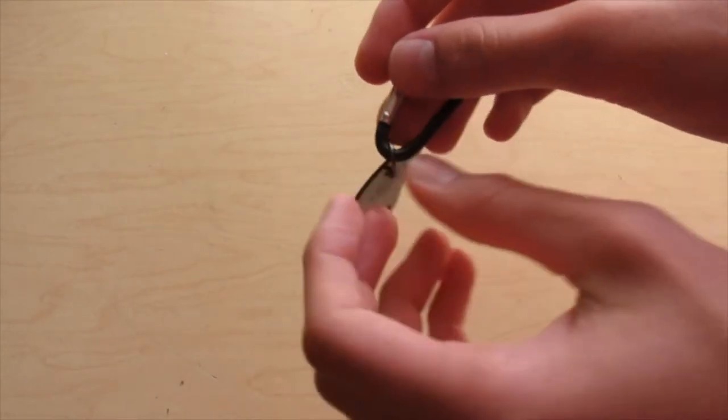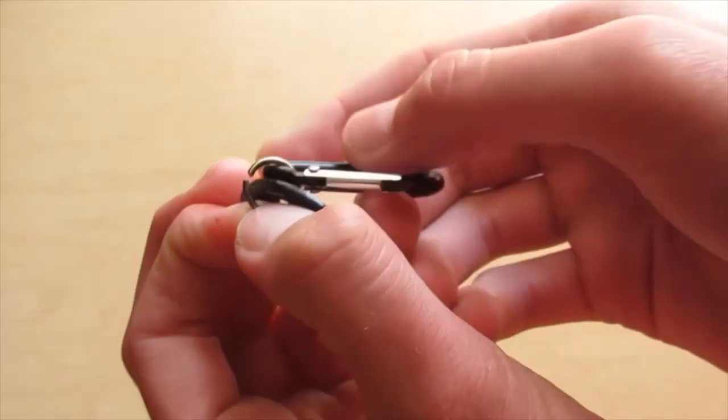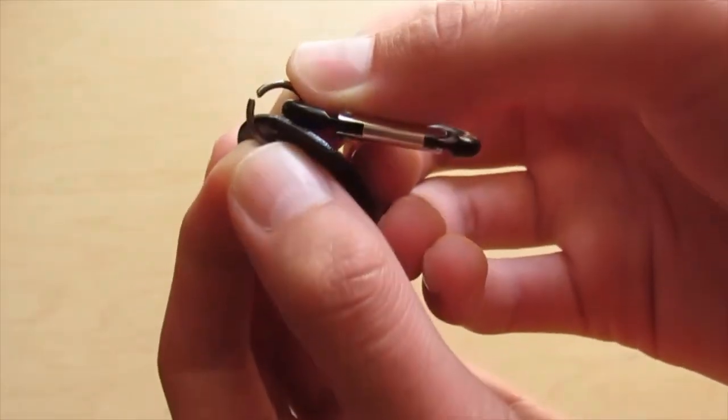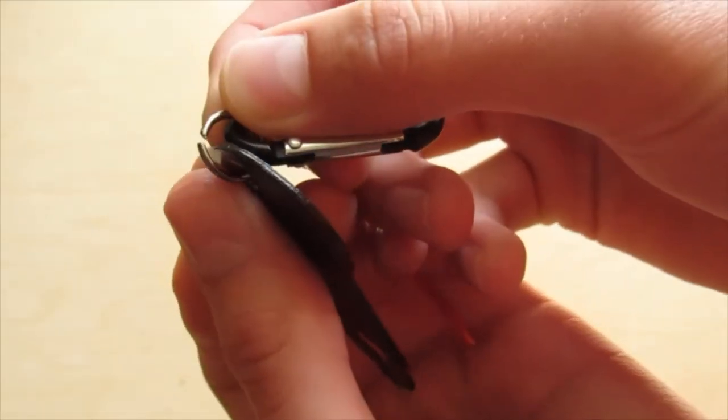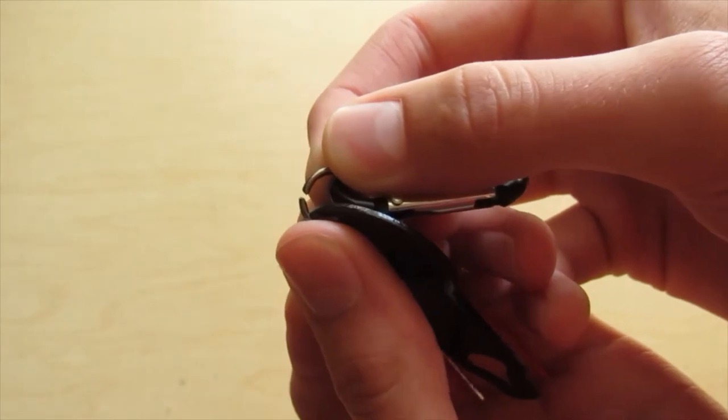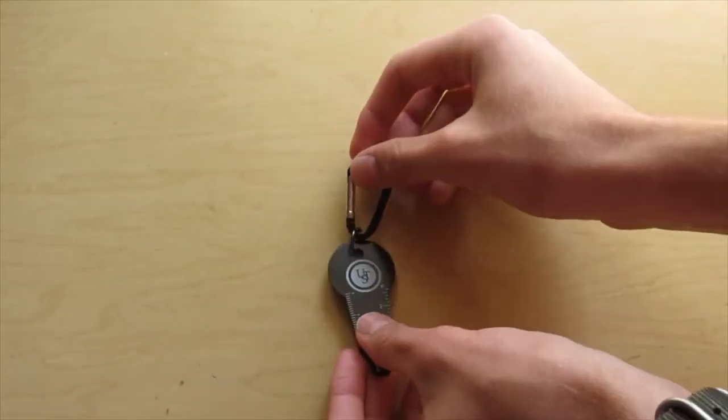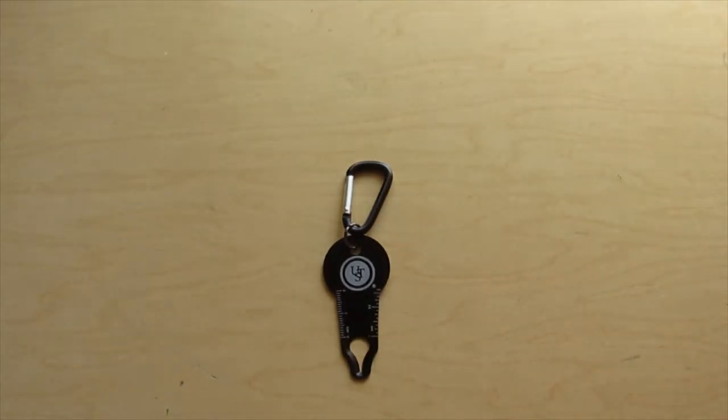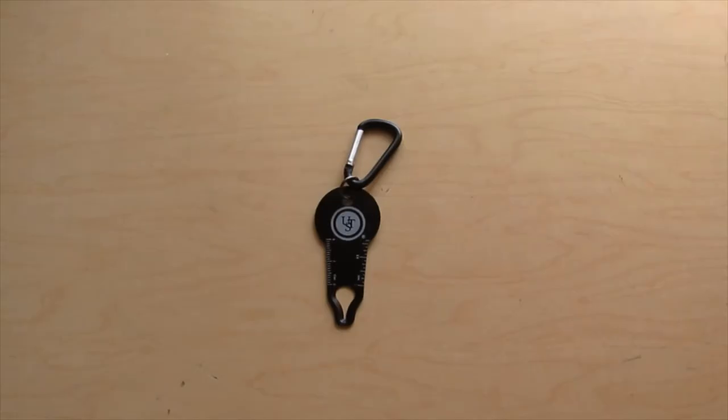And the other is that this key ring, this metal ring that they use to attach it to the carabiner, looks quite cheap. And it's got a slit there, and I think that it actually fell off when we were camping and I had to put it back on. I'm not quite sure, but that's what I recall happening. So those are the two little things that I don't really care for about it.